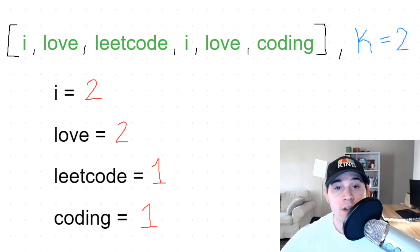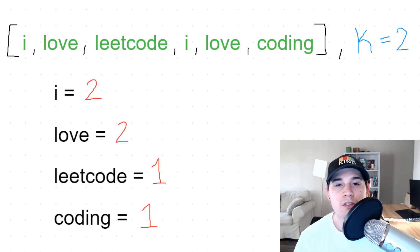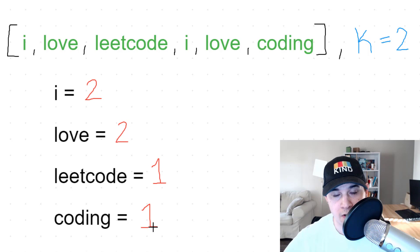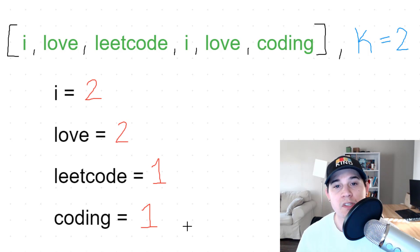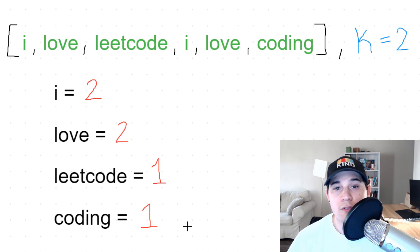We've already done the first step: getting all the frequencies. Now for the second step, we need to put these pairings — ('i', 2), ('love', 2), ('leetcode', 1), ('coding', 1) — inside a structure that will order them in a specific order. The structure perfect for maintaining order as we add and remove elements is a priority queue, which utilizes a min or max heap under the hood.